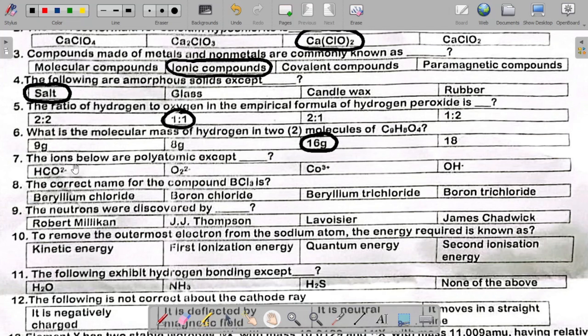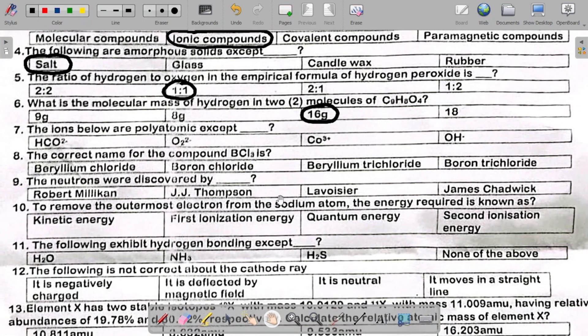Number seven says the ions below are polyatomic except. The only non-polyatomic ion here is Co. Now don't get confused. The Co here is not capital C and capital O. Capital C capital O would be carbon and oxygen. But when you have a C with a small o, the element there is called cobalt. So cobalt is just a single atom.